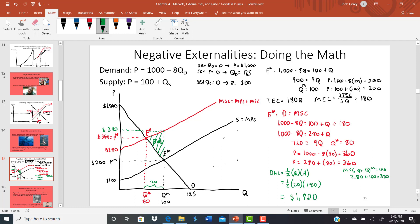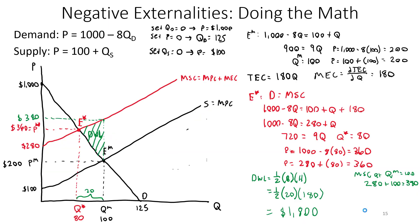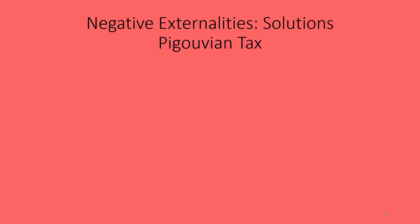That dead weight loss of $1,800 represents the damage created by all the transactions above what society would prefer, given these marginal external costs in the tuna market. On the exam, be able to calculate where the market equilibrium is, where the socially optimal equilibrium is, and the dead weight loss being created. That's all for this lecture — we've covered quite a bit in part one. Come back for the next video, where we'll start on potential solutions to negative externalities, beginning with the Pigouvian tax.